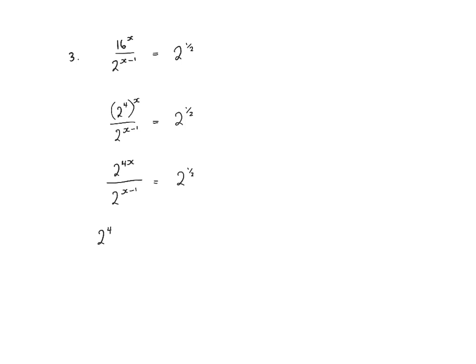We have 2 to the power of 4x subtract x minus 1 equals 2 to the power of a half. Brackets are important here, otherwise we'll miss the double negative when multiplying out. So we get 2 to the power of 3x plus 1 equals 2 to the power of a half. Therefore 3x plus 1 equals a half. Rearranging, 3x equals negative a half, so x equals negative 1 sixth.